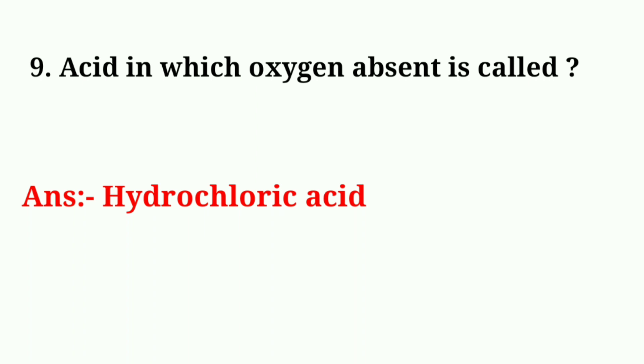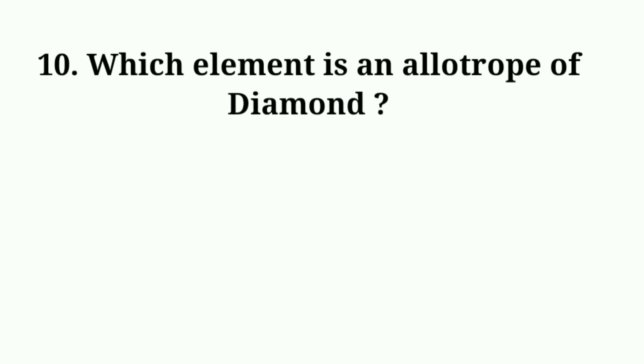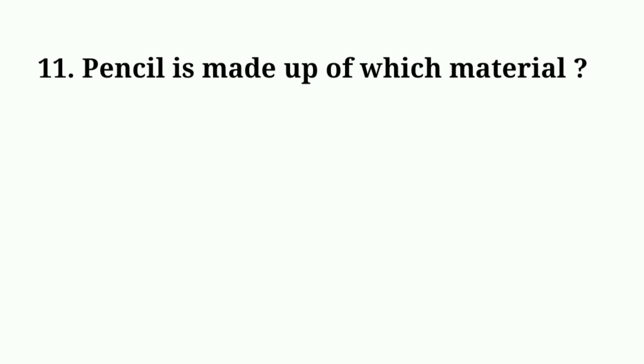Which element is an allotrope of diamond? Answer: Carbon. Pencil is made of which material? Answer: Graphite.